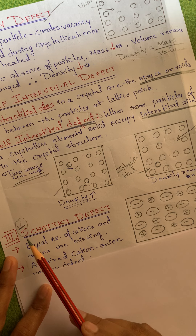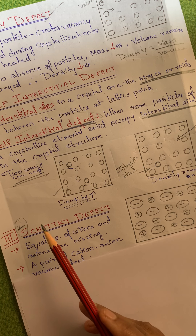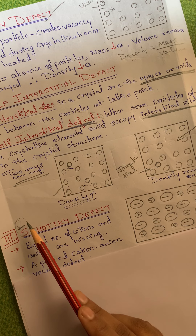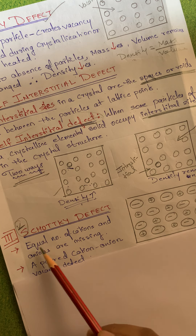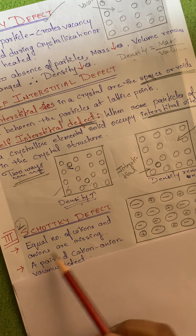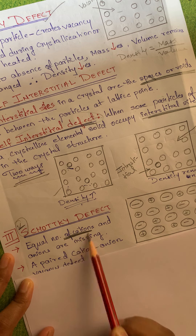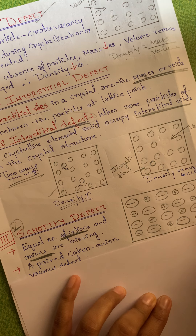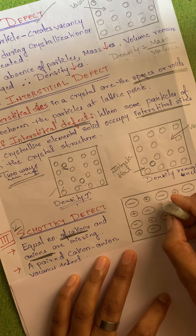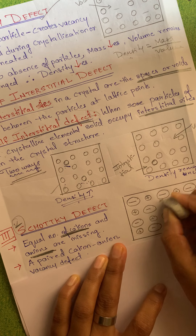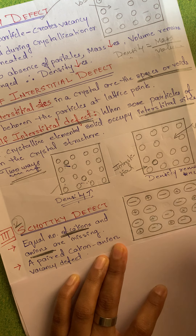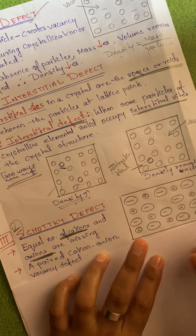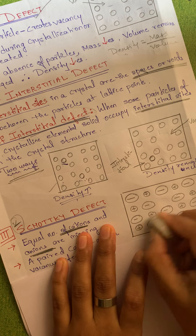To summarize: in vacancy defect, density decreases. In self-interstitial defect, there are two cases. We are learning these under stoichiometric point defects. Now moving to the next one — Schottky defect. To remember Schottky defect, always think of 'V' for vacancy.